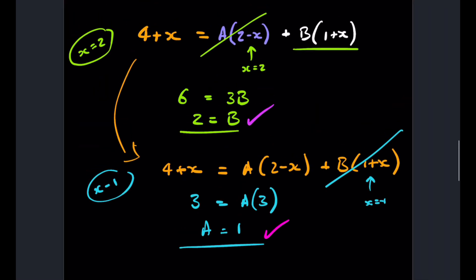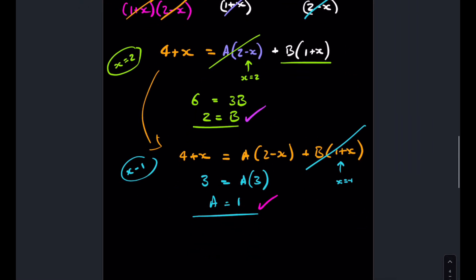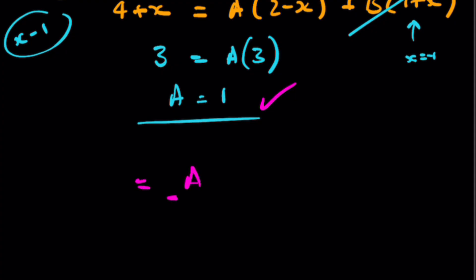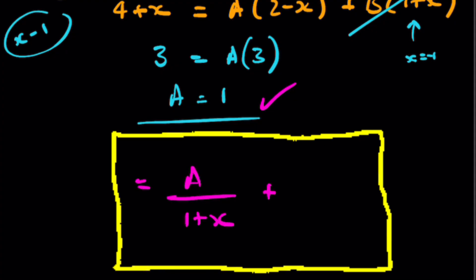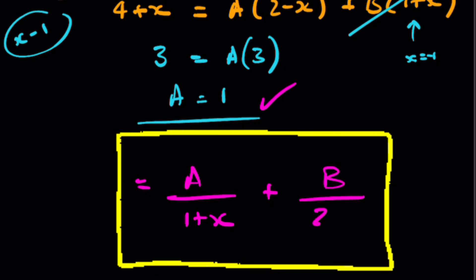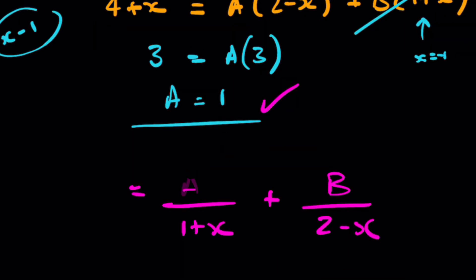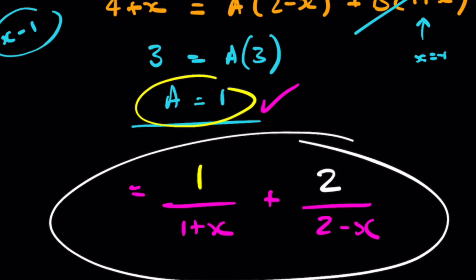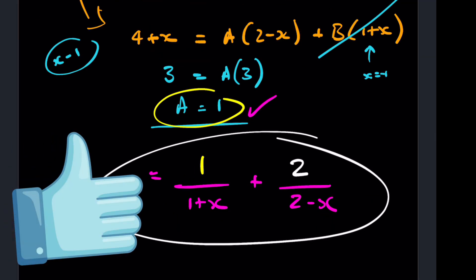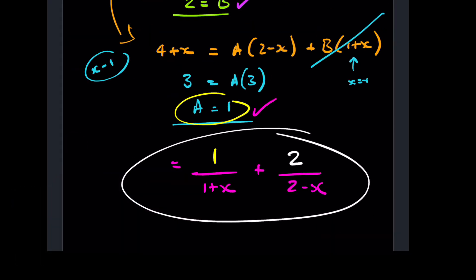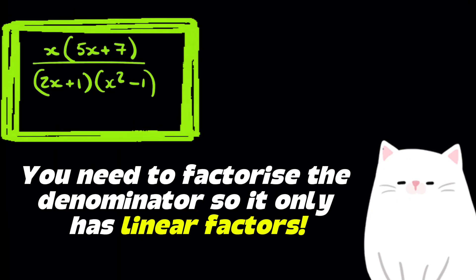We go back to the form A/(1+x) + B/(2−x). We've established A=1 and B=2, so we replace those letters with the values. That is the result of our first partial fraction decomposition — we've broken this complicated quotient into two simpler ones.